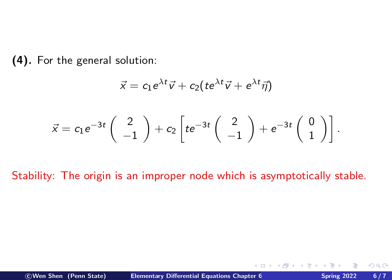And the last step we can talk about will be the stability. Well, that is determined by the sign of the lambda, which is negative, and therefore the origin here, which is an improper node, and then which is asymptotically stable.